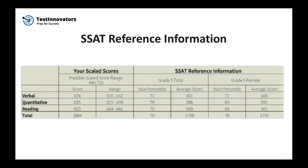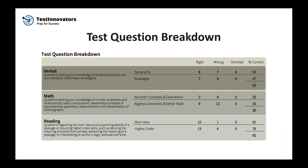Let's move on to the next part of the score report: the test question breakdown. This section provides valuable information about the test content and how well you did on specific types of questions. The verbal section is broken down into synonyms and analogies, and you can see what you got right, wrong, and omitted. Math is broken down into two categories: number concepts and operations, and then algebra, geometry, and other math — again, broken down into right, wrong, and omitted — so you can see where you need to study if you're taking the test again.